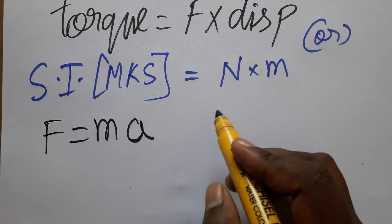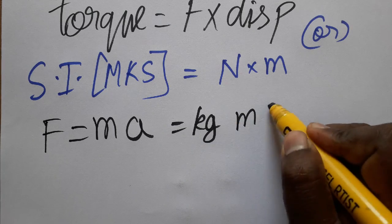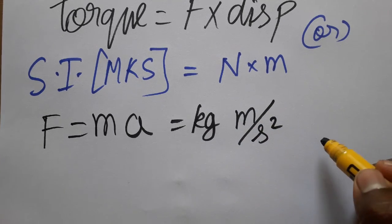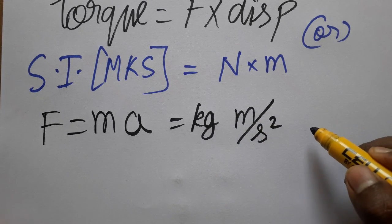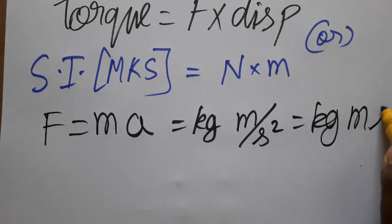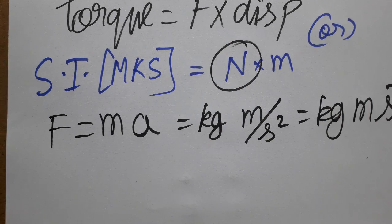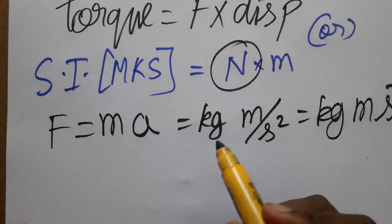Mass we can take as kg, acceleration we can take as meter per second squared. Because velocity by time, acceleration is meter per second squared, so kg meter second minus two. This is the SI unit of force, called one Newton.